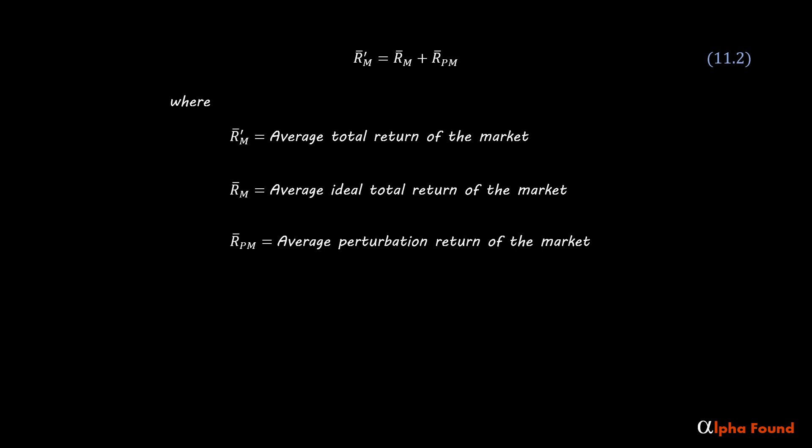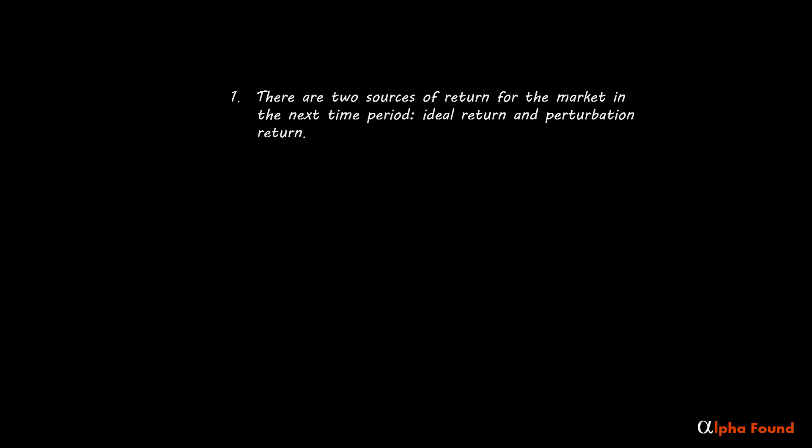To begin putting everything into a mathematical framework, the average ideal return of the market is the weighted average of the returns of the constituent securities that make up the market. The same goes for the average market perturbation returns. From the last video, there are two sources of return for the market in the next time period: ideal return and perturbation return. There is only one source of market return in the long run — ideal return — since the expected return of the perturbations is zero and the perturbations are mean reverting.